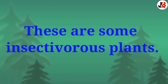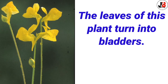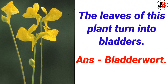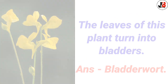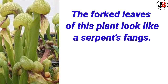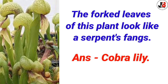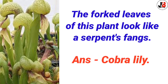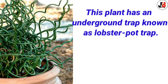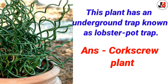The leaves of this plant turn into bladders — the answer is Bladderwort. The forked leaves of this plant look like a serpent's fangs — the answer is Cobra Lily. This plant has an underground trap known as a lobster pot trap — the answer is Corkscrew Plant.